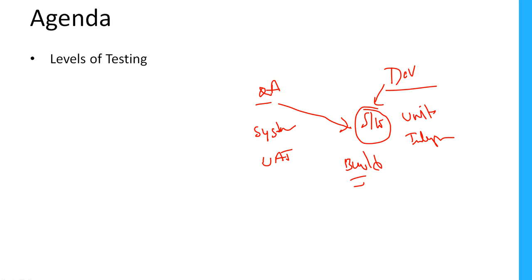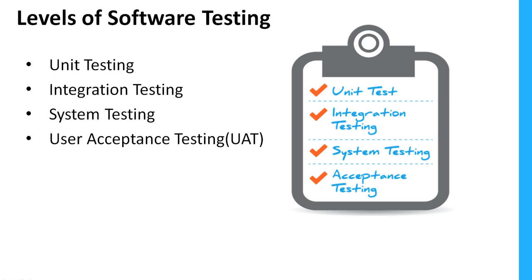These testing levels should happen step by step, one after another. As soon as the basic build or program is ready, the first testing starts with the developer — that's unit testing. Then they integrate multiple modules and do integration testing. Once they hand the build to the QA team, we perform system testing and UAT. These are the different levels: unit testing, integration testing, system testing, and user acceptance testing.